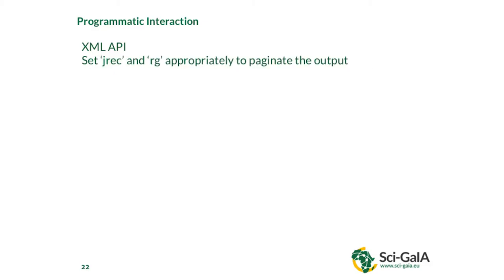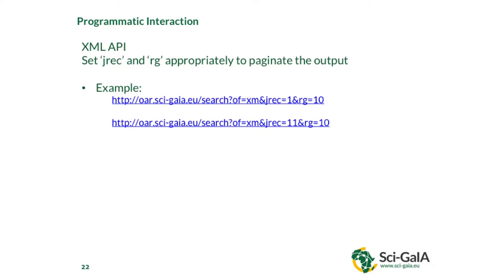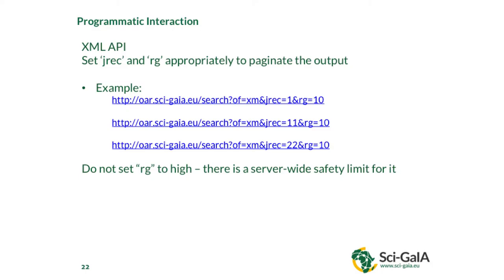If you set the JREC param and RG param appropriately, you can paginate the output. For example, using this request you get the first N records of the repository. If you use this query, you get the second N records starting from record number 11 (JREC=11). In the same way, you can get the third set of records using JREC=22. If you don't set the RG param, by default it is set to its highest value, which in most cases is 10.